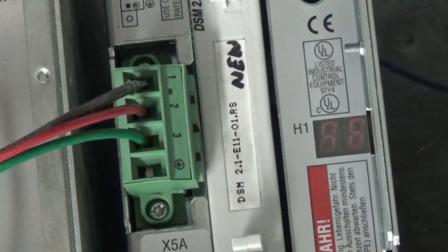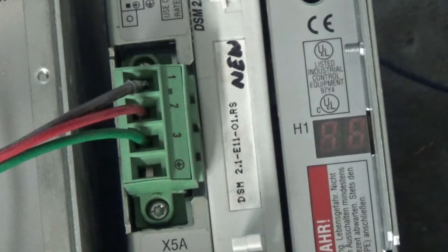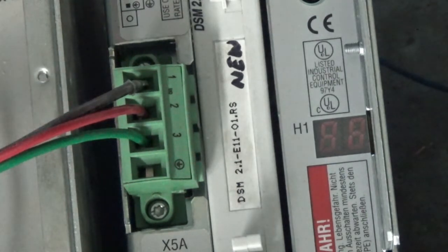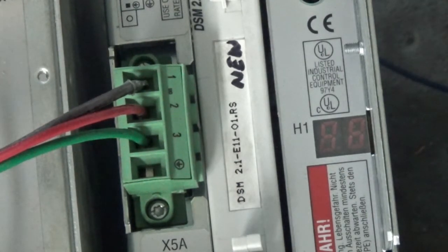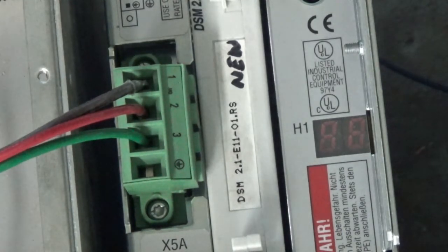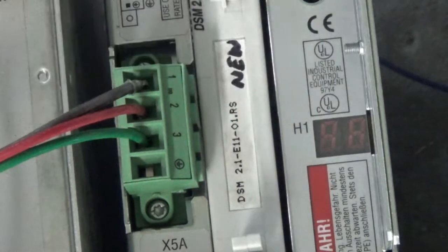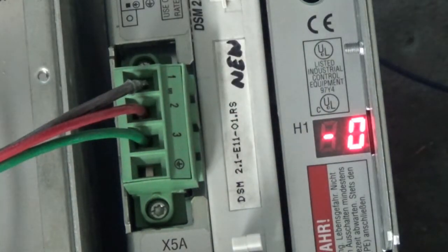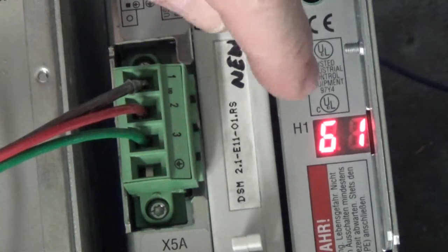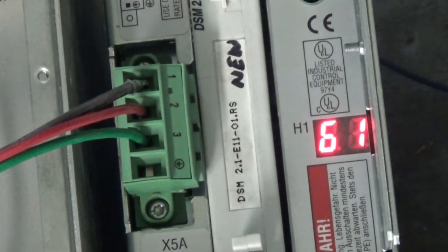Here's an Indromat servo drive, model number DDS-03.1-W030-R, and this servo drive was booting up to alarm 61. Overcurrent, short to ground. Let me power it up. Watch this display right here. There we go. Alarm 61. We're going to have to fix that.